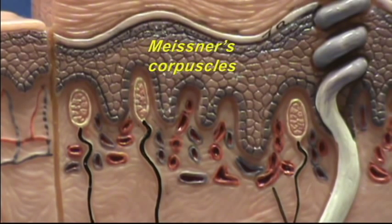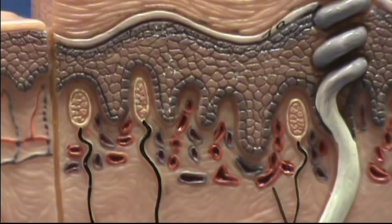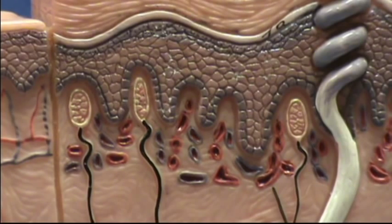This is the typical location where you're going to find them — in the papillae of the papillary layer, very close to the epidermis, where they can pick up any mechanical deformation, which you would then sense as touch.